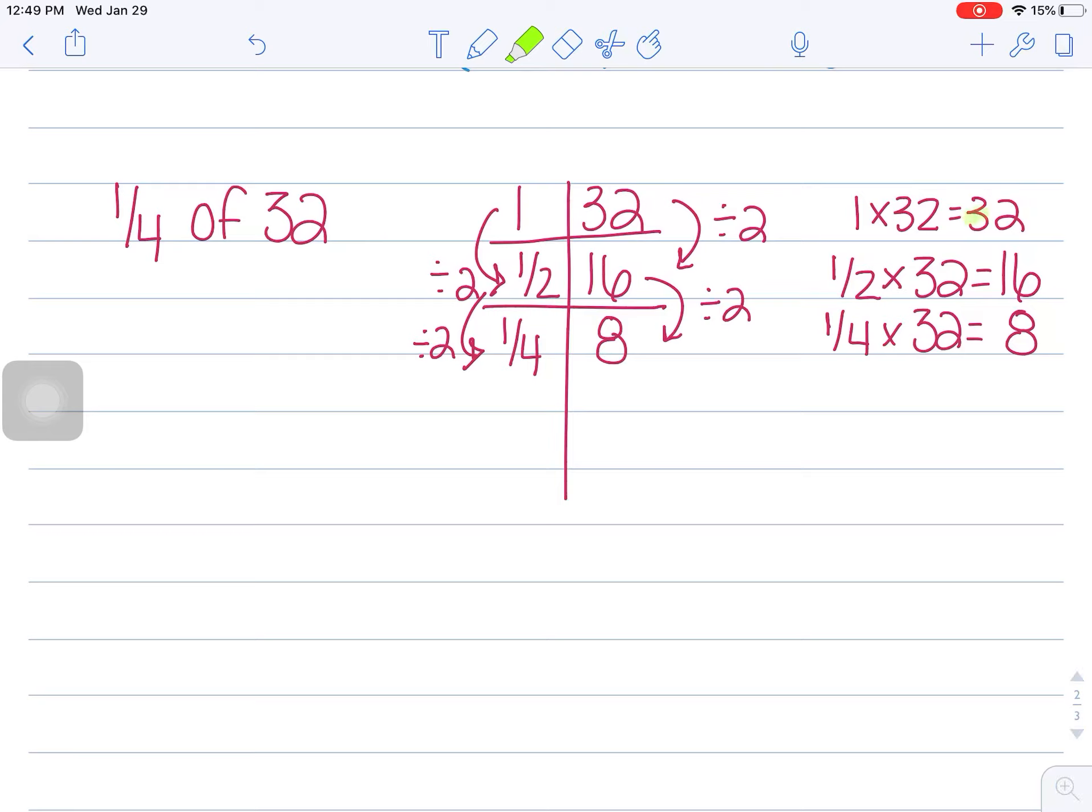The relationship between these numbers here is this is half as large as 32, and this is half as large as 8. So this is just another way to look at this problem. So a fourth of 32 is 8.